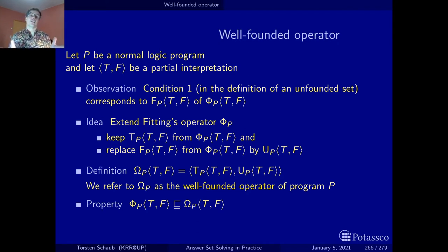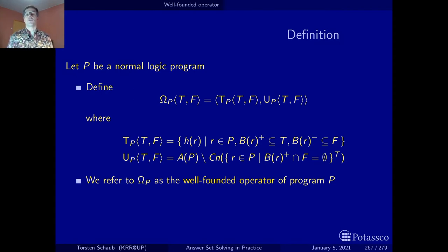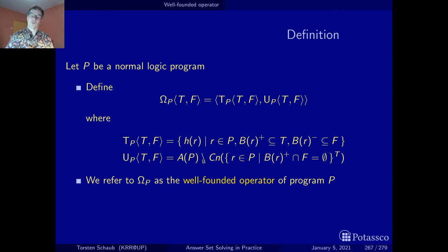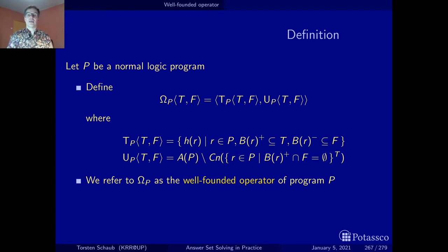Now that we derived the operator, let's summarize again and define it once and for all. This is just to give you a self-contained definition of the well-founded operator where I spell out the first and the second operator. The first part is the same as in the fitting operator, where we determine atoms that can already be found to be true. The second part is the alternative definition of the greatest unfounded set, where we first compute all possible atoms and then by subtracting this from the atoms in the program obtain the impossible atoms in view of the current partial interpretation. Together these two give us the well-founded operator.